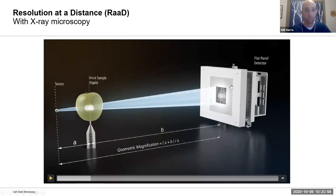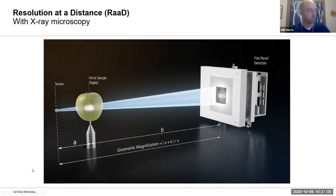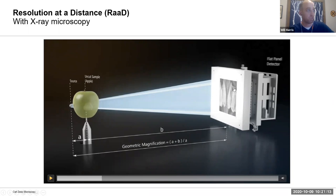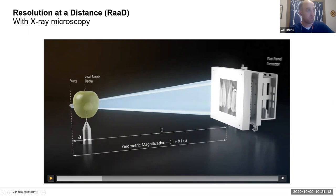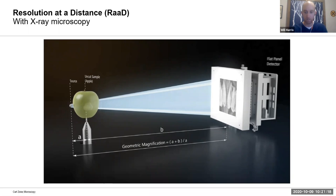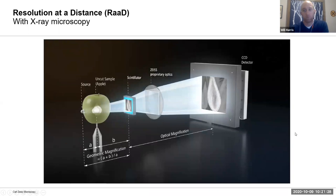That's how x-ray tomography has worked for years and years, the origin of the technique. But there are limits: you want to put the apple close to the x-ray source to get a big projection, but you can only move it so close since the apple itself accommodates some physical size. So if you don't want to cut it, you're at the limit of how close you can put it to the x-ray source.